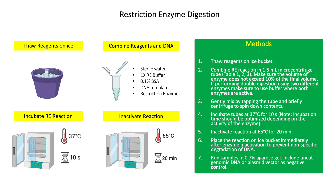Incubate the tube at 37 degrees Celsius for 10 minutes. Incubation time should be optimized depending on the activity of the enzyme. Then inactivate the reaction at 65 degrees Celsius for 20 minutes. Place the reaction on ice immediately after enzyme inactivation to prevent non-specific degradation of DNA. Load samples in 0.7% agarose gel. Include uncut genomic DNA or plasmid vector as a negative control.